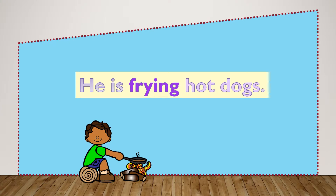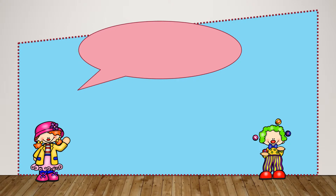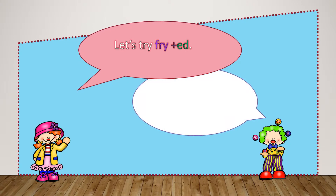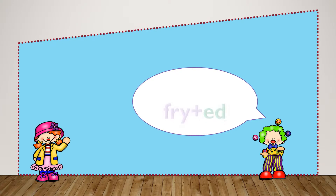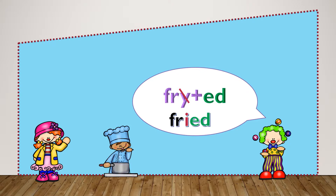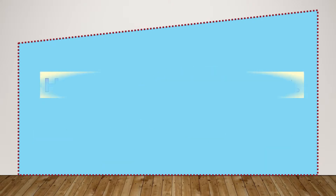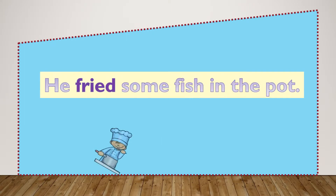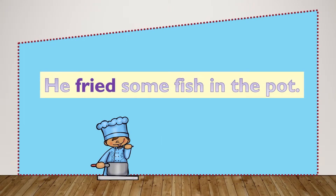He is frying hot dogs. Now we're going to try fry plus -ed. Here we would not have two I's next to each other, so we will remove the Y, change it to an I, and add -ed. Fried. He fried some fish in the pot.